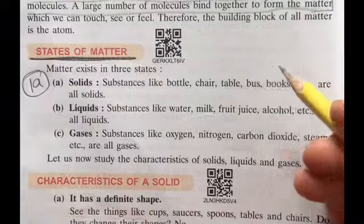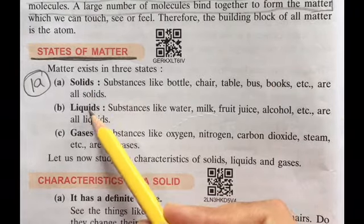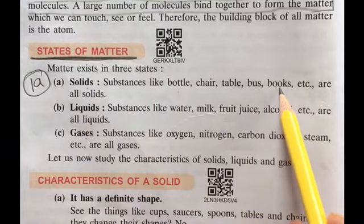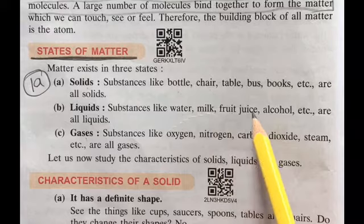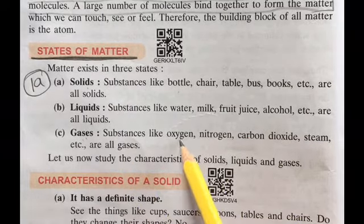There are three states of matter: solid, liquid, and gases. Solids like bottle, chair, table, bus, books. Liquids for example water, milk, fruit juice, alcohol. Gases: different gases like nitrogen, oxygen, carbon dioxide, steam, vapors.